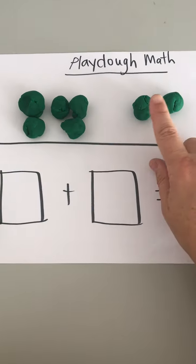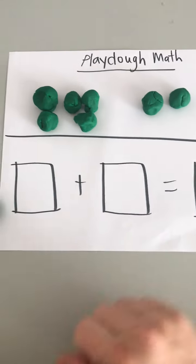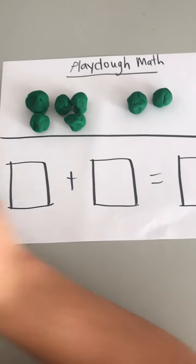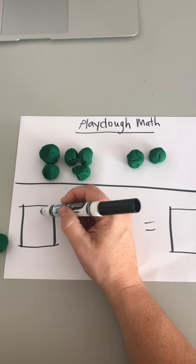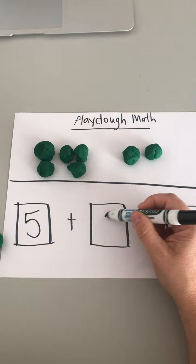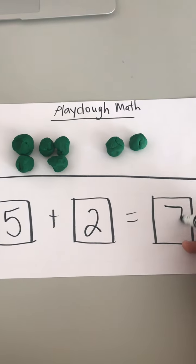Start at 5 and then add on 6, 7. And once you've counted, you can write the number sentence on your board. So I have 5 plus 2 equals 7.